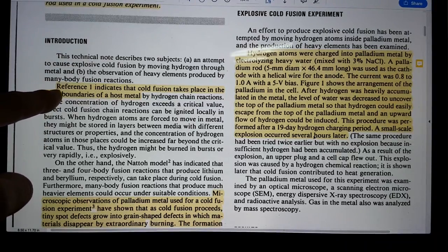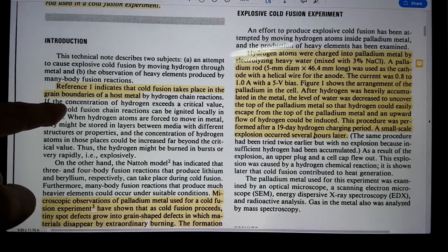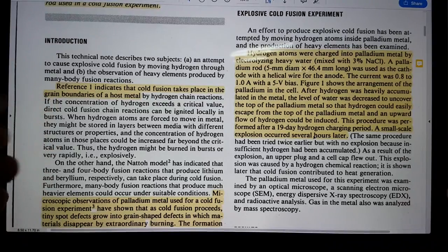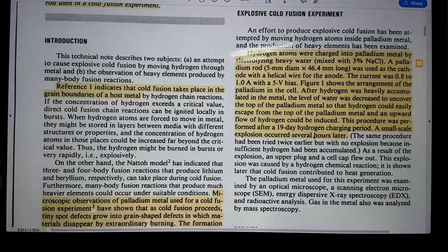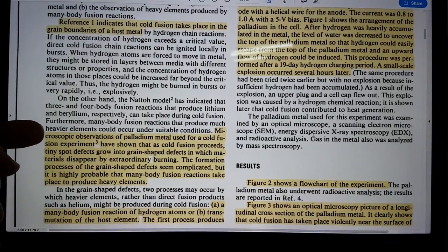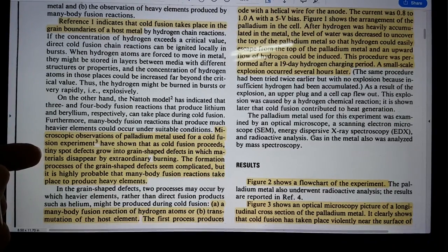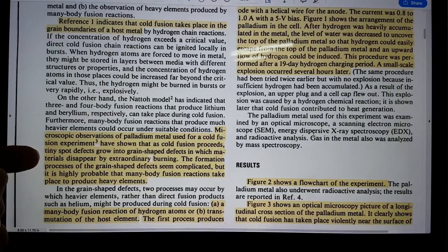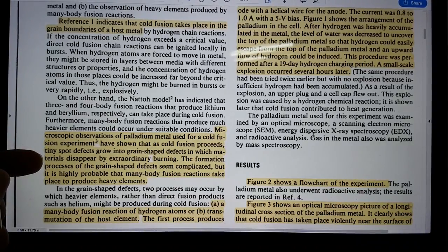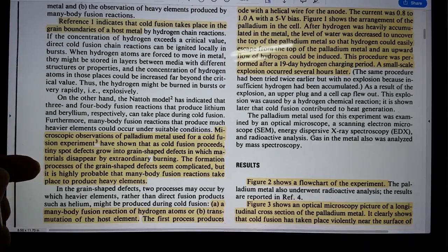However, I agree with this, and basically, a grain boundary has an impedance mismatch, as does a surface, and so the active agent does not like to cross it, so it starts to dishevel or performs work in those places. So moving on, he's saying, microscopic observations of palladium metal used for cold fusion experiment have shown that as cold fusion proceeds, tiny spot defects grow into grain-shaped defects in which materials disappear by extraordinary burning. Disappear by extraordinary burning. That's a very interesting observation. I happen to agree with it.